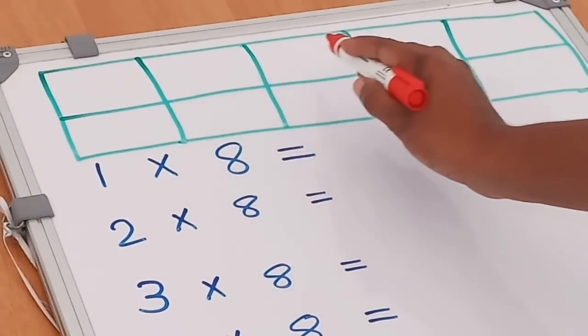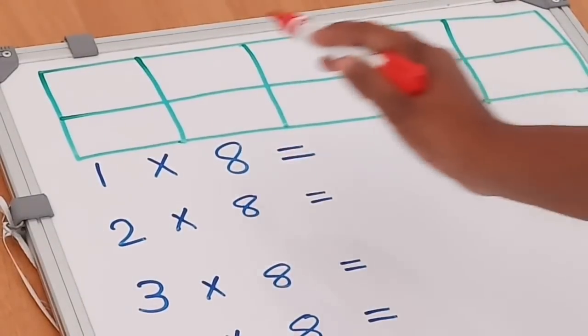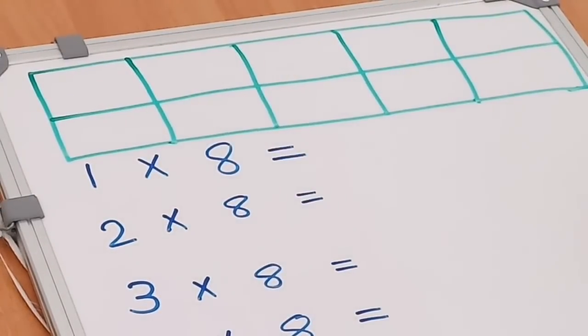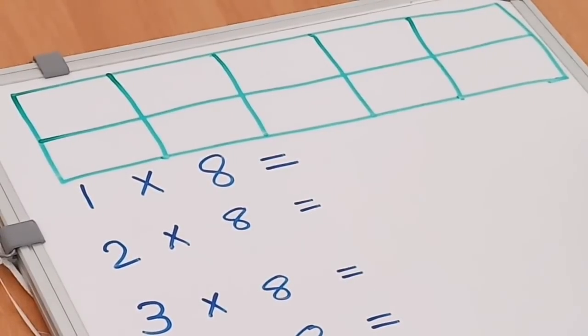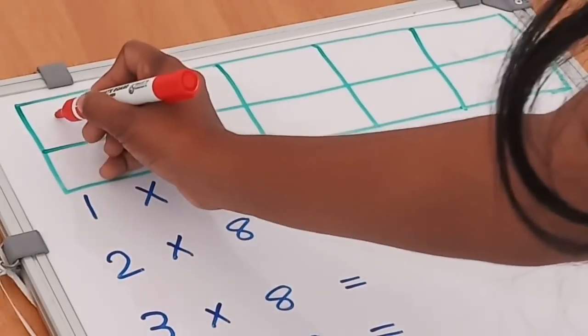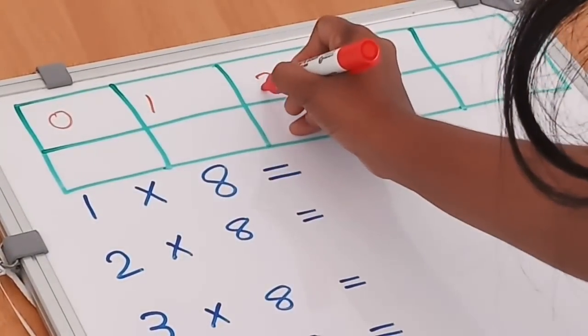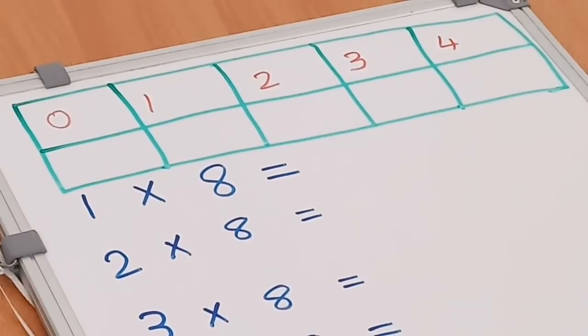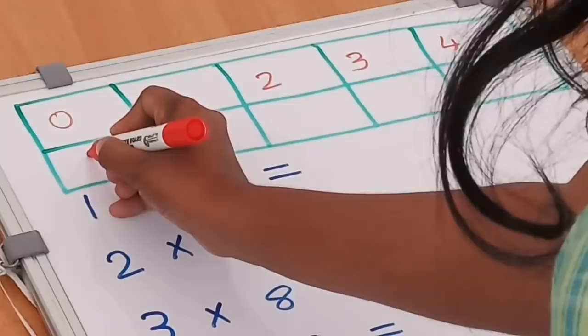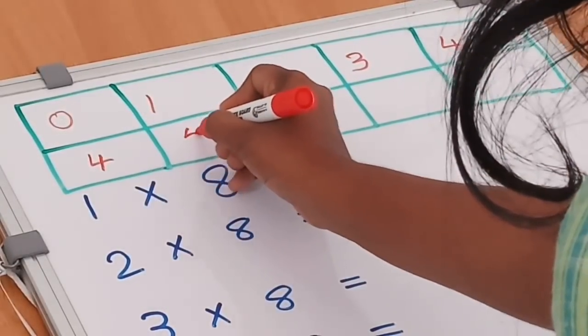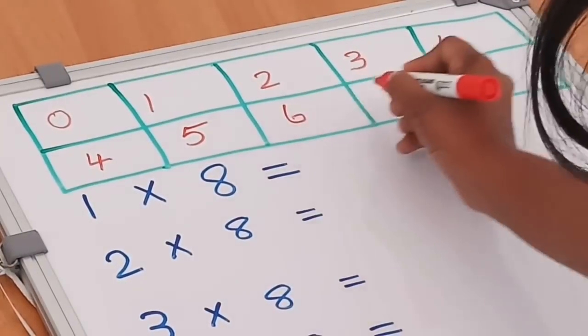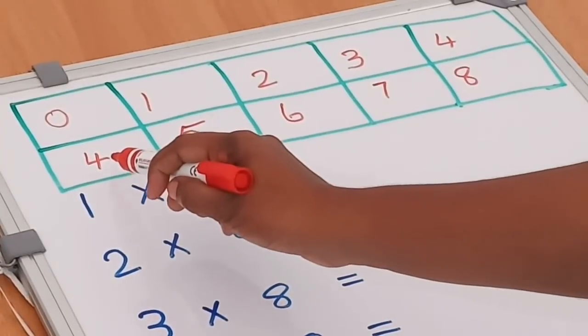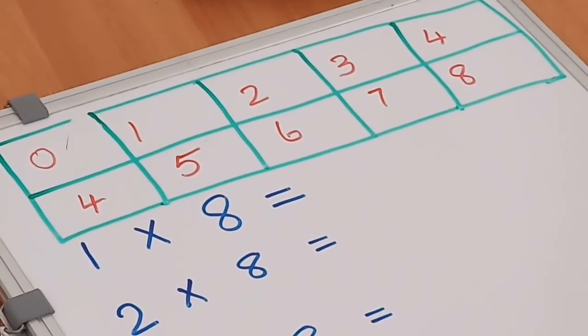This table has 5 columns and 2 rows. We have 10 spaces here. In the first row, we have 0 to 4: 0, 1, 2, 3, 4. The next row is 5, 6, 7, 8. First row is 0 to 4, then next row is 4 to 8.